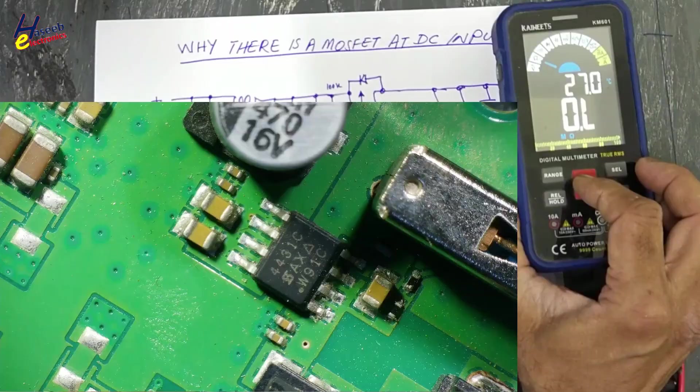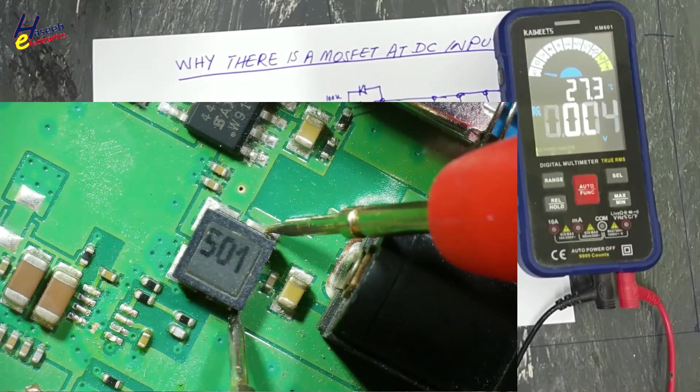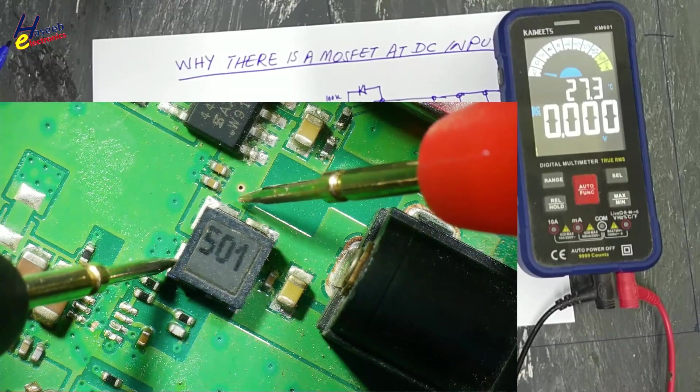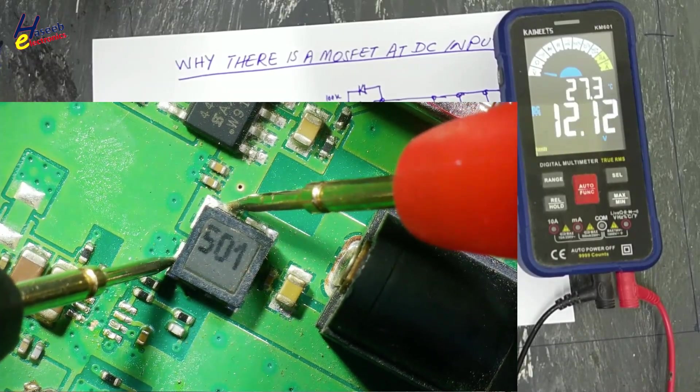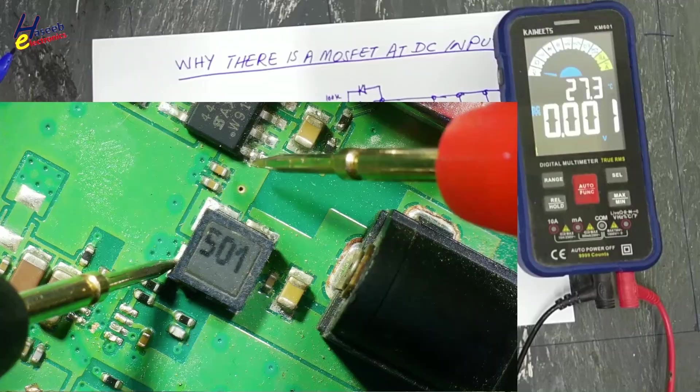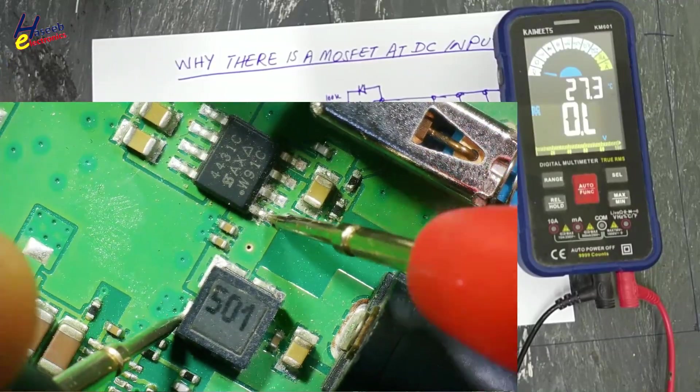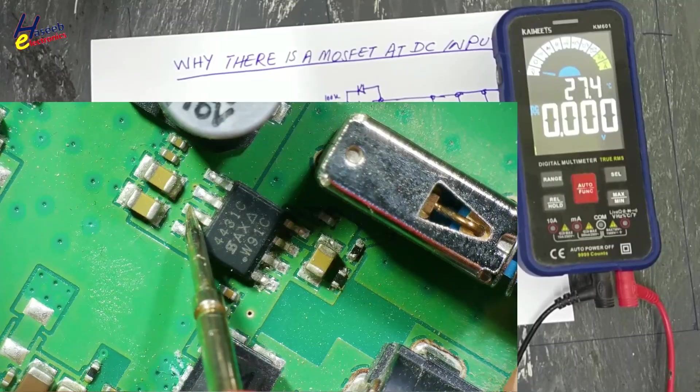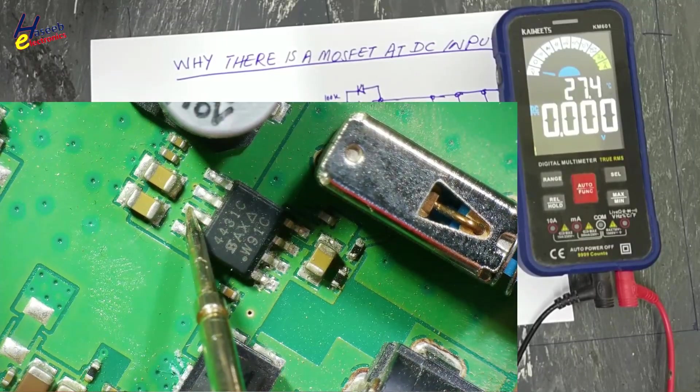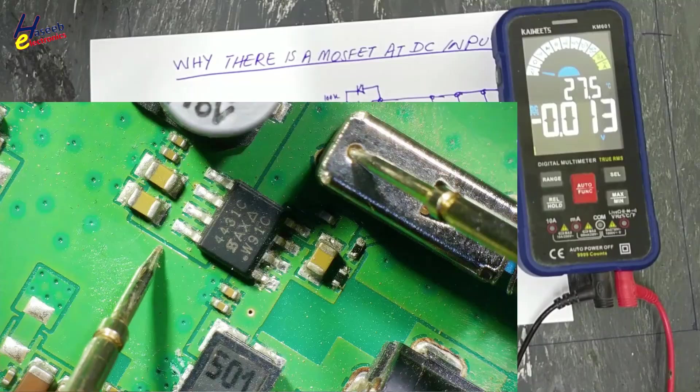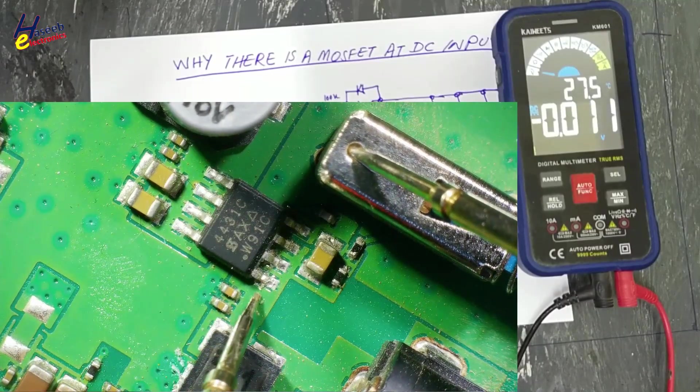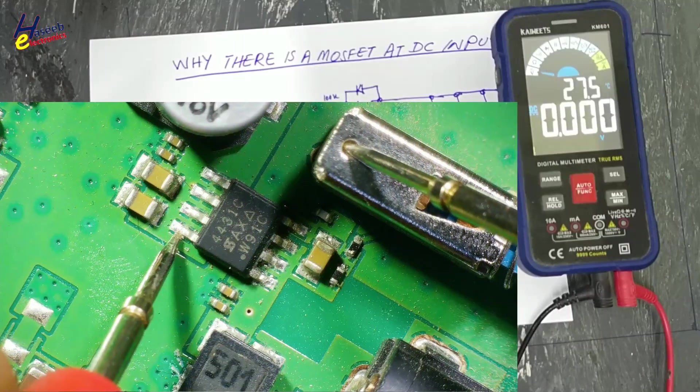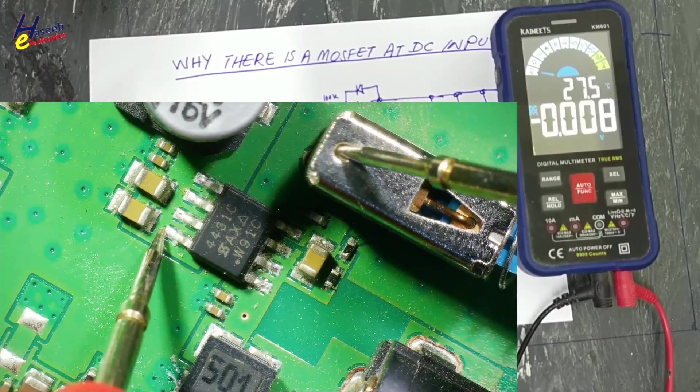DC voltage positive, and this side is negative. Negative will reach here, and positive will pass to this side. And this positive voltage is reaching to this point. This time voltage is not passing to output side. Voltage is present here, but it is not passing to this side because this switch is off now.